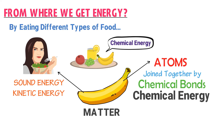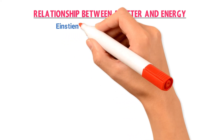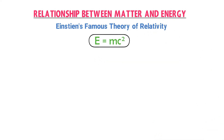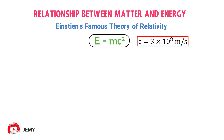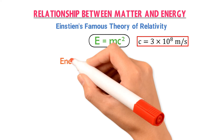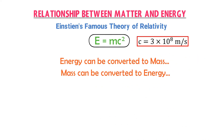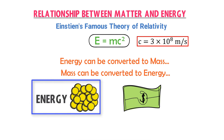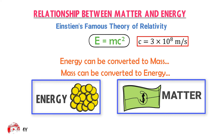Let me quickly teach you the relationship between matter and energy. According to Einstein's famous theory of relativity, E = mc². It states that the amount of energy E possessed by an object is equal to its mass m multiplied by the square of the speed of light c, where c is 3 × 10⁸ meters per second. This theory suggests that energy and mass are interchangeable — energy can be converted to mass and mass can be converted to energy. For example, energy and mass are to each other as coins and paper money: if energy is the coin, matter is the paper money, but they are the same thing in different contexts.